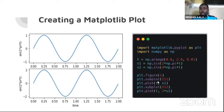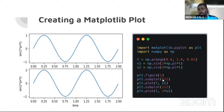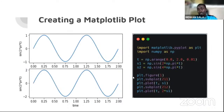First, we create a figure explicitly — though if you don't, it's created implicitly. Then we add subplots. Matplotlib allows you to create multiple plots on a single figure. We add a subplot with two rows and one column (2,1,1) and plot t and s1 on it. Then we access the second subplot (2,1,2) and plot t and 2*s1, which is equivalent to s2.